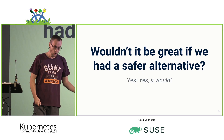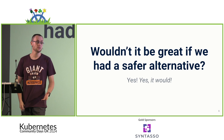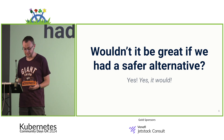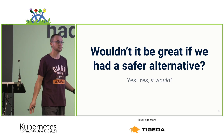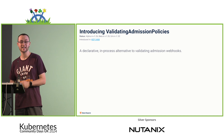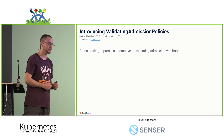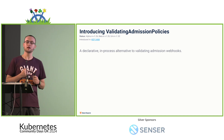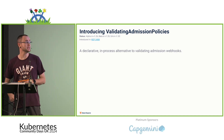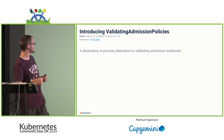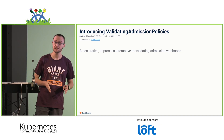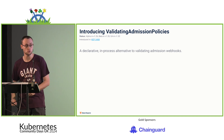But wouldn't it be great if we had a safer alternative — one that didn't have the possibility of taking our API server down? It turns out we do. I'd like to introduce you to validating admission policies. These were introduced as an alpha in Kubernetes 1.26, became beta in 1.28, and as of 1.30 are generally available and ready for you to use.